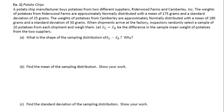The one example in these notes is about potato chips. A potato chip manufacturer buys potatoes from two different suppliers: Ryderwood Farms and Camberley Incorporated. The weights of potatoes from Ryderwood Farms are approximately normally distributed with a mean of 175 grams and a standard deviation of 25 grams. The weights from Camberley are approximately normally distributed with a mean of 180 grams and a standard deviation of 30 grams. Inspectors randomly select a sample of 20 potatoes from each shipment. Let x bar sub c minus x bar sub r be the difference in the sample mean weight. Part A: What is the shape of the sampling distribution of x bar sub c minus x bar sub r, and why?